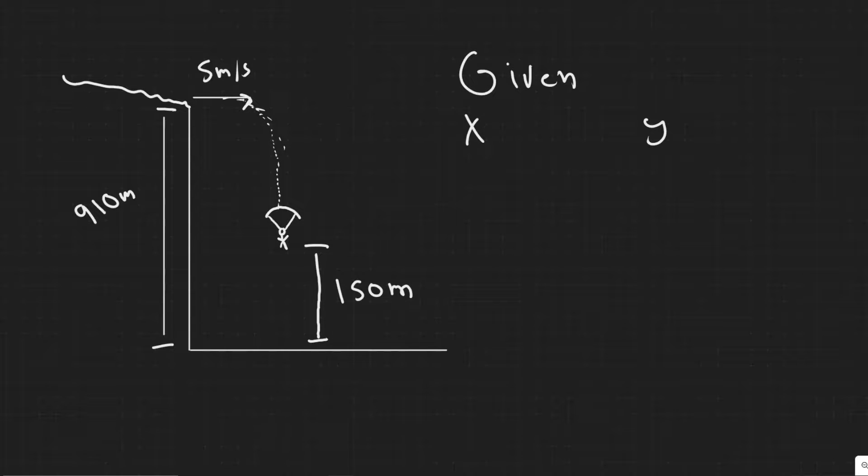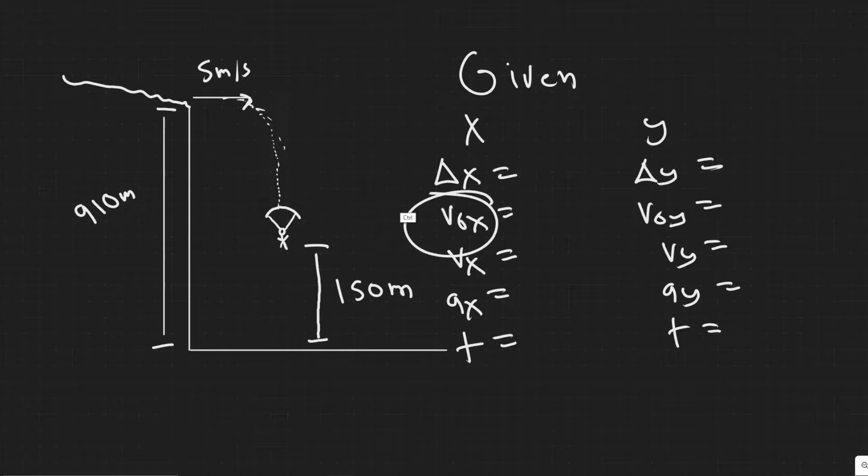I like to write down my five main kinematic variables for each direction. Your variables are delta X, delta Y for the Y, V sub 0X, V sub 0Y, V sub X, V sub Y, A sub X, A sub Y, and then T. But T is not dependent on either direction, so it's basically directionless. Delta X is its change in the X. The initial velocity is just its speed in the beginning of our interval. V sub X is the velocity at the end of your interval. A sub X is the acceleration. And then T is just the time.